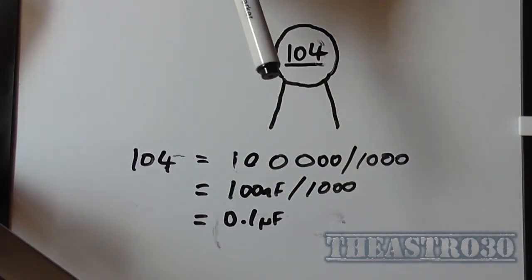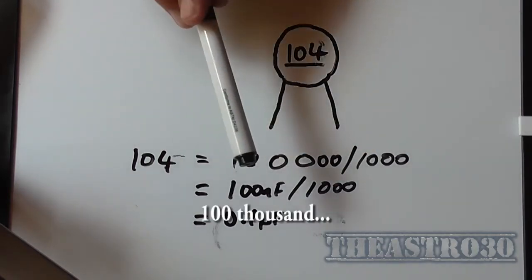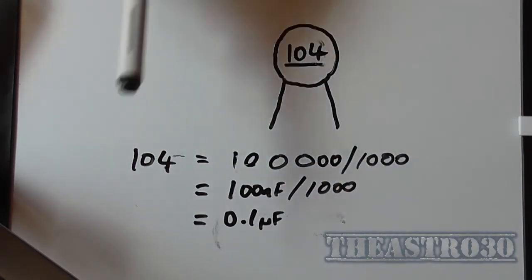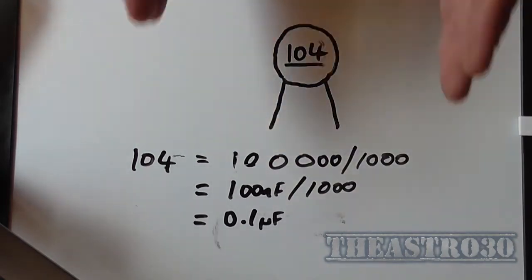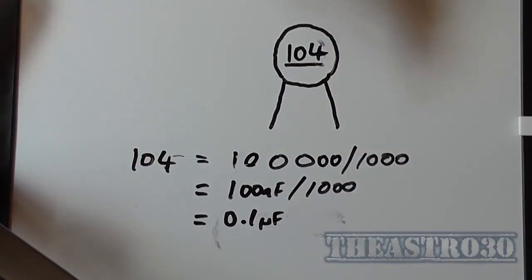And if you really wanted to work out what it would be in picofarad, well you times it by a thousand, you'd get 10,000. So then you know it's going to be 10 with four zeros on, so it equals 104. So you can do it in reverse as well.